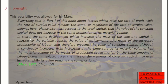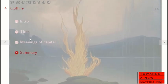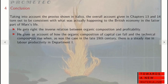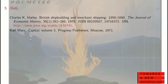So he was saying it can be the case that the value of constant capital may fall per worker. In summary, taking into account that proviso, the overall account given in Chapters 13 and 14 of Capital Volume 3 turned out to be consistent with what actually happened to the British economy in the latter part of Marx's life. What he got right was the inverse relationship between organic composition and profitability, and his account of how the organic composition of capital can fall while the technical composition rises — as was the case in the late 19th century — due to a steady rise in productivity in Department One. Sources used were Harney on British Shipbuilding and Merchant Shipping, and Karl Marx's Capital.